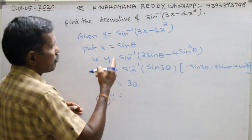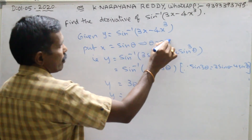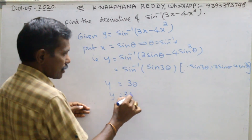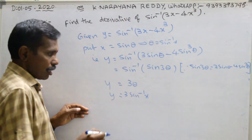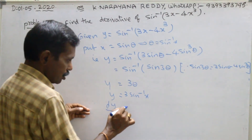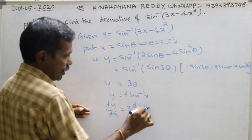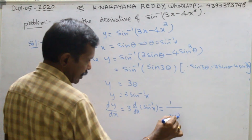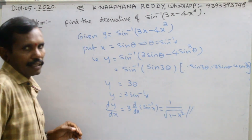What is theta? This implies theta equals to sin inverse x. So y equals to 3 sin inverse x. Now, dy by dx equals to 3 times the derivative of sin inverse x, which is 1 by root of 1 minus x square. That is the required answer.